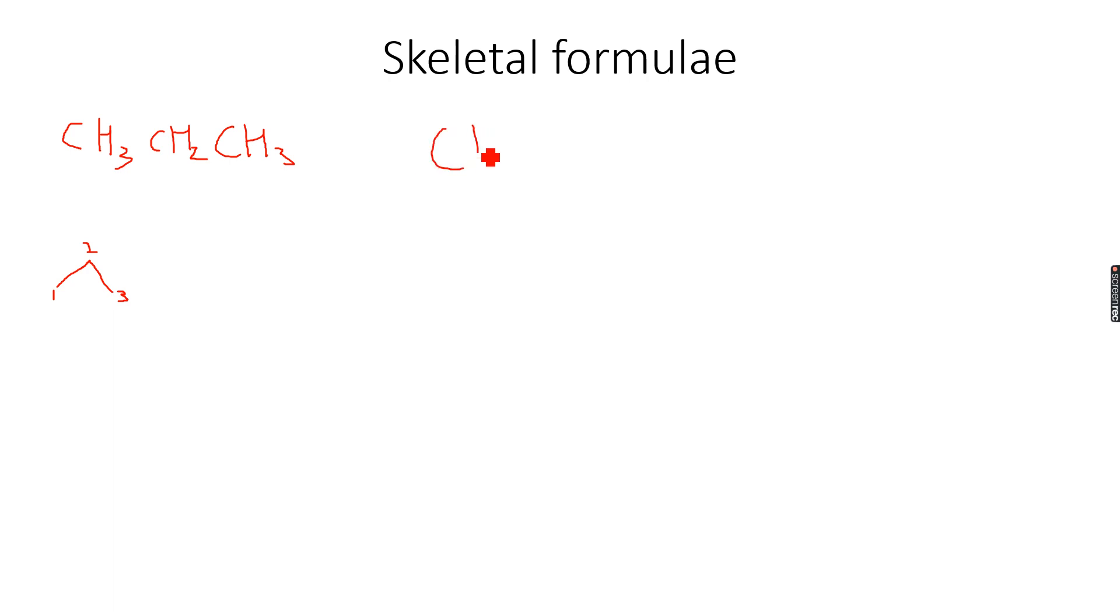Similarly if you have butane which is CH3CH2CH2CH3, then we make this. So one, two, three, and four. You can see four ends in total of lines. So this is how we write skeletal formula.